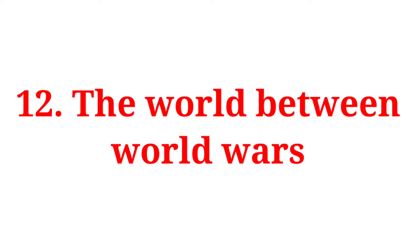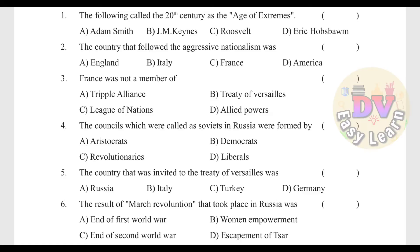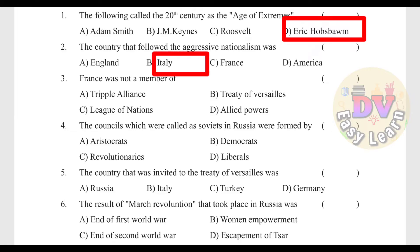Chapter 12: The World Between World Wars. Question 1: The following call the 20th century 'the age of extremes' — Answer: Eric Hobsbawm. Question 2: The country that followed aggressive nationalism — Answer: Italy. Question 3: France was not a member of — Answer: Triple Alliance.